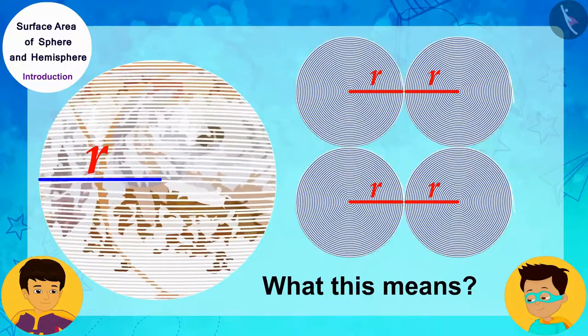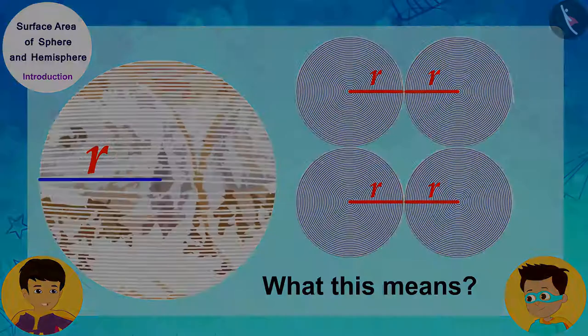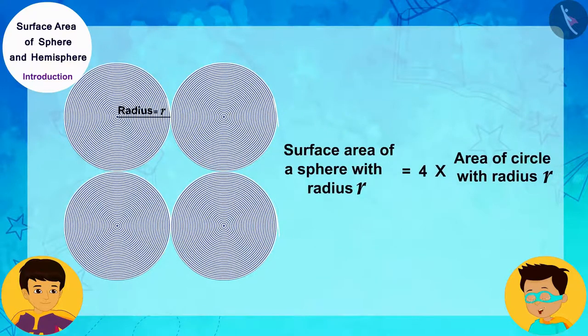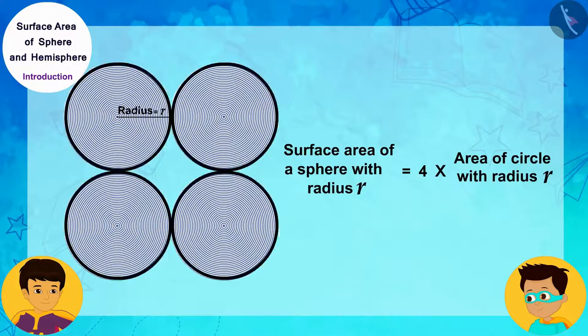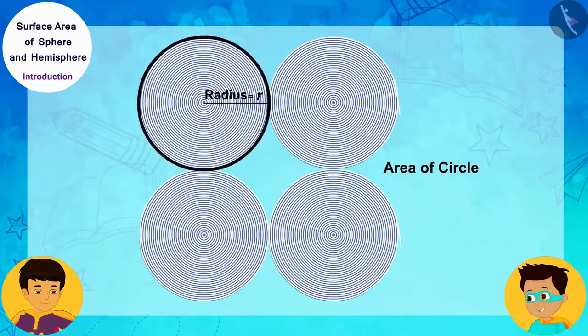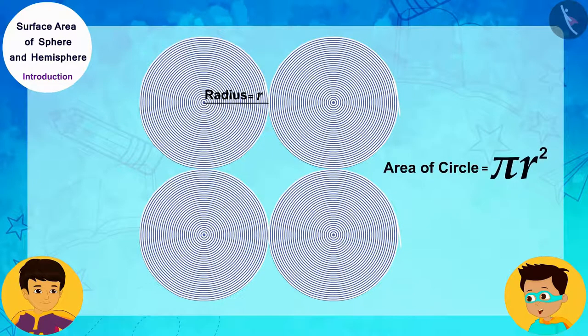Can you tell me what this means? I get it! This means the surface area of a sphere with radius R is equal to the area of four circles with radius R and the area of a circle of radius R is pi times R square.